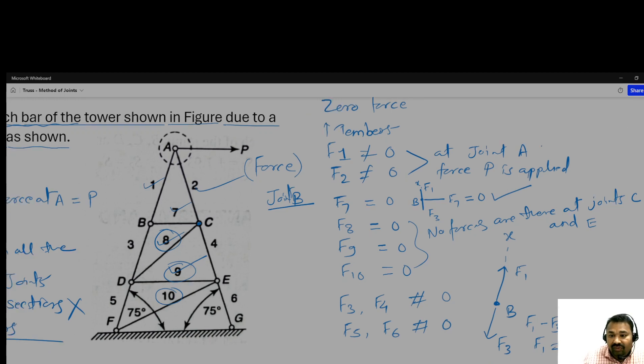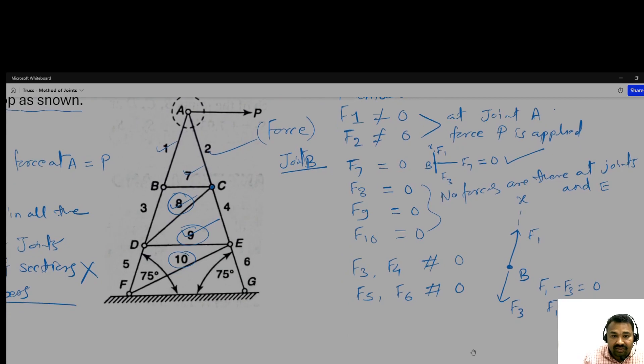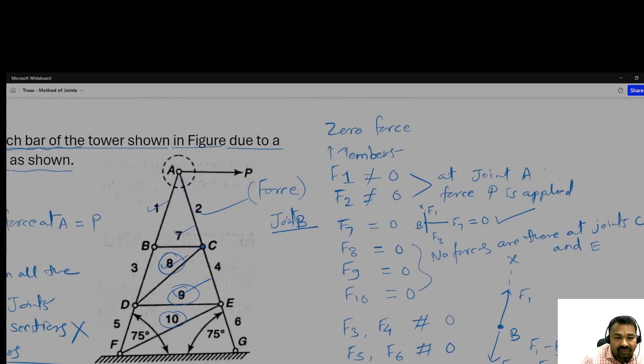Let us come to joint C. We want to visualize it here for better understanding. This is the zero force F7, here is joint C, this is F2, this is F4, F7 is already zero, and this inclined one is F8.